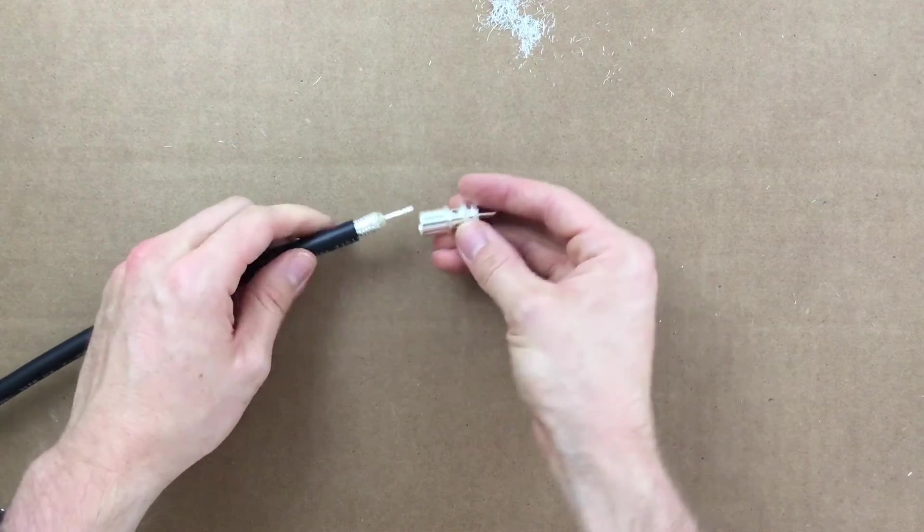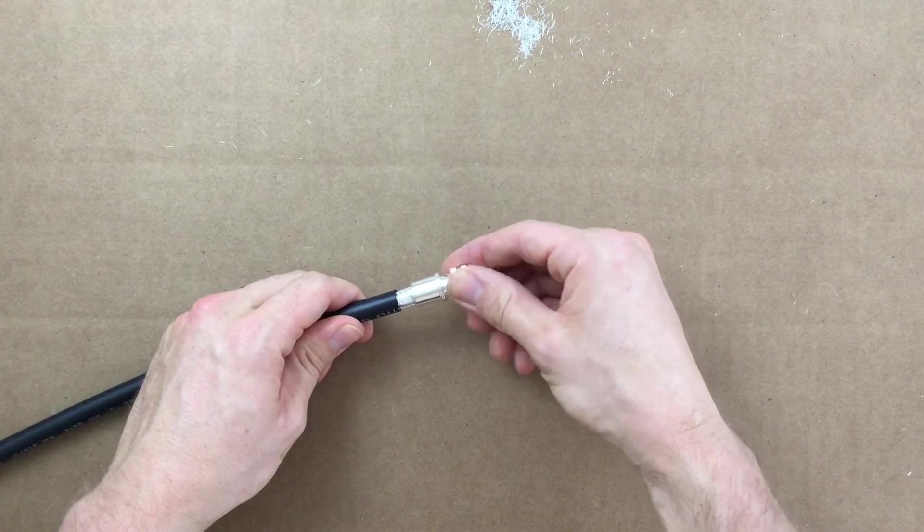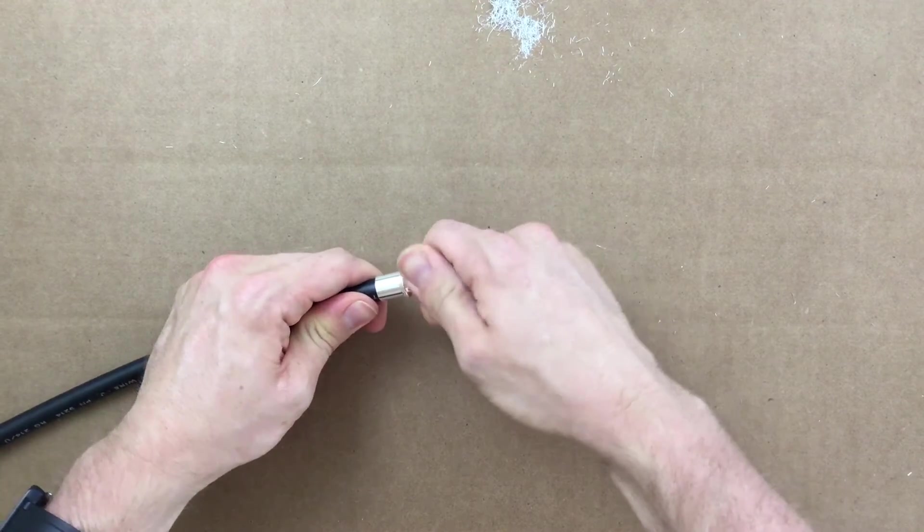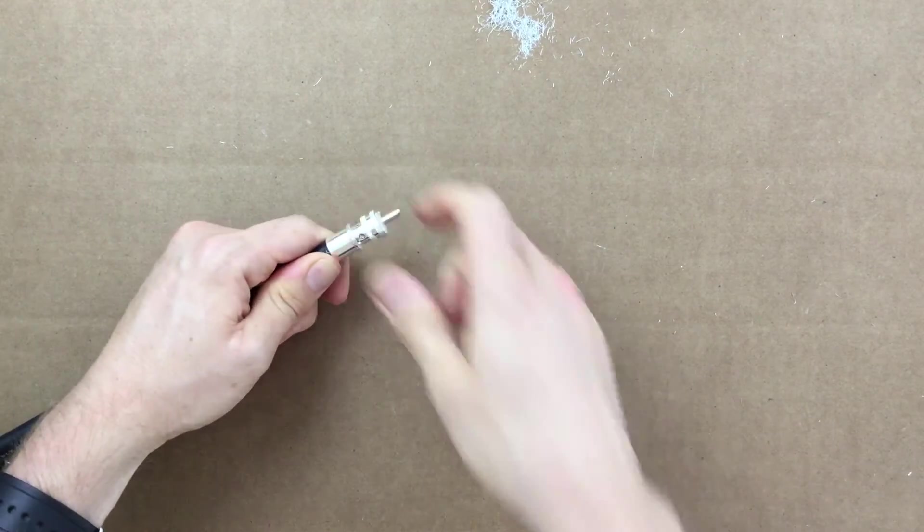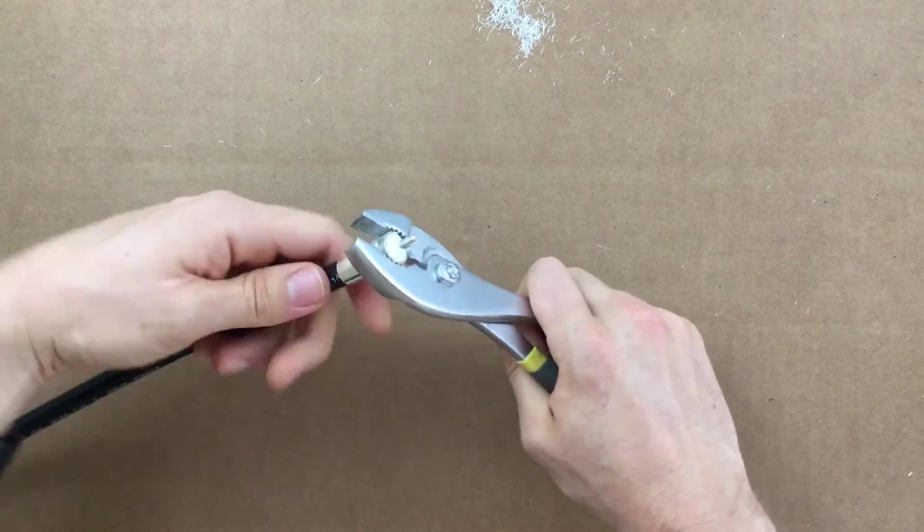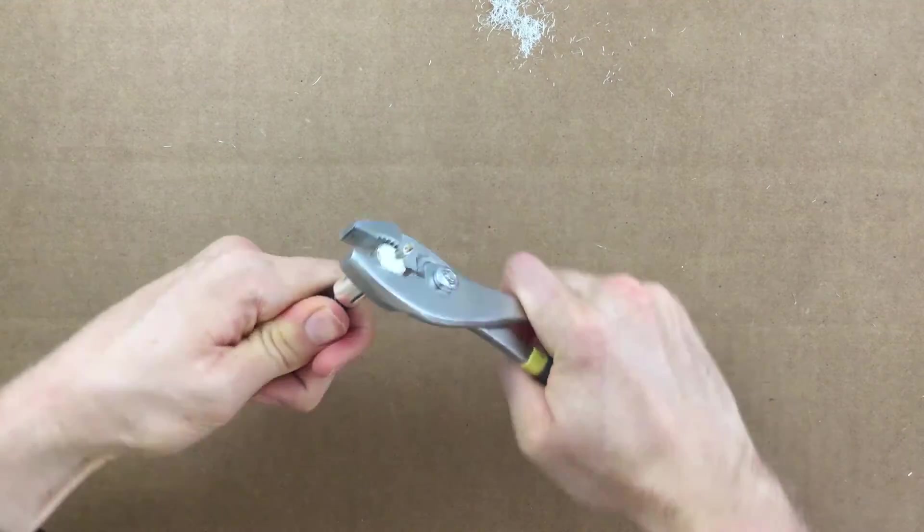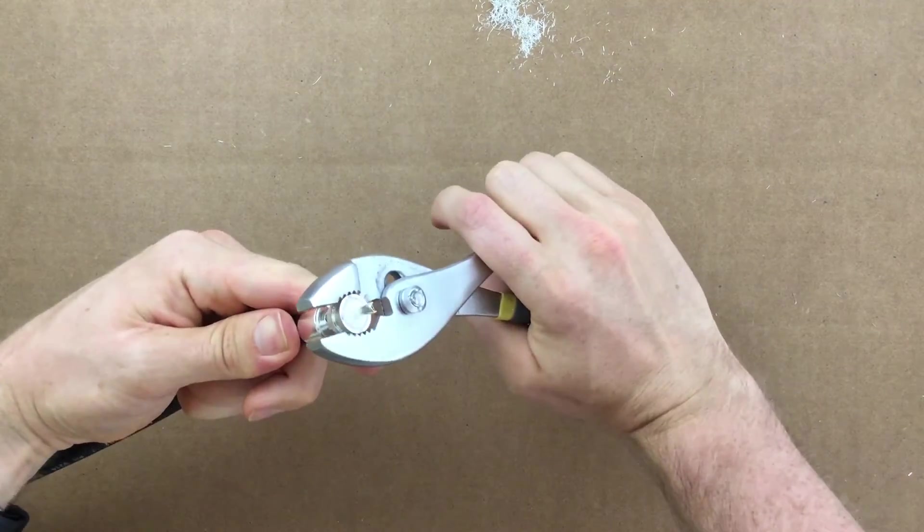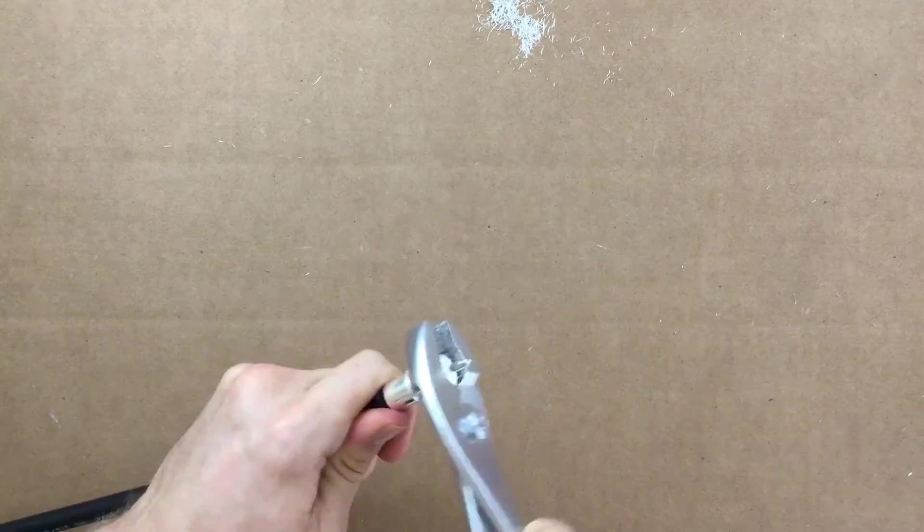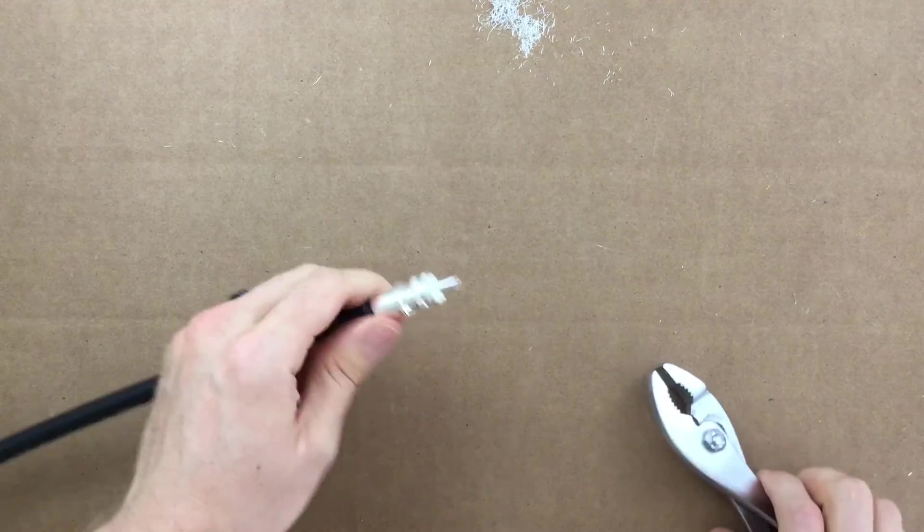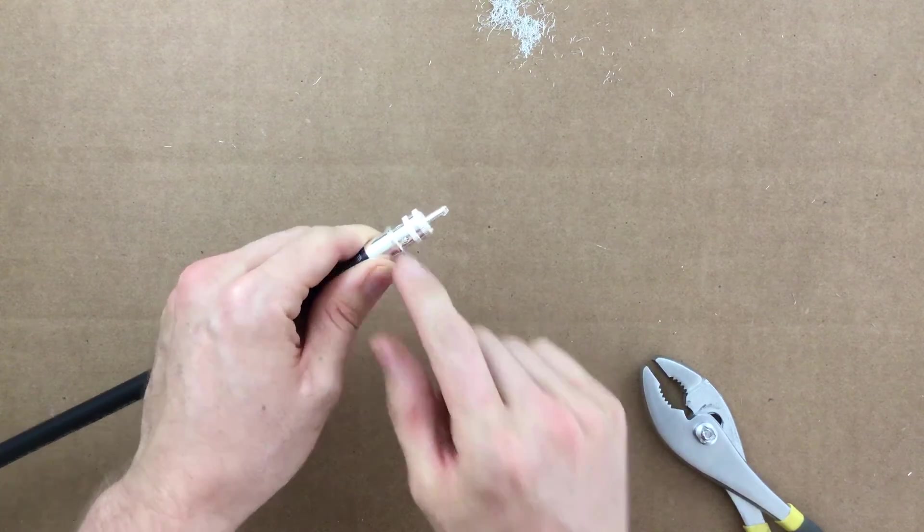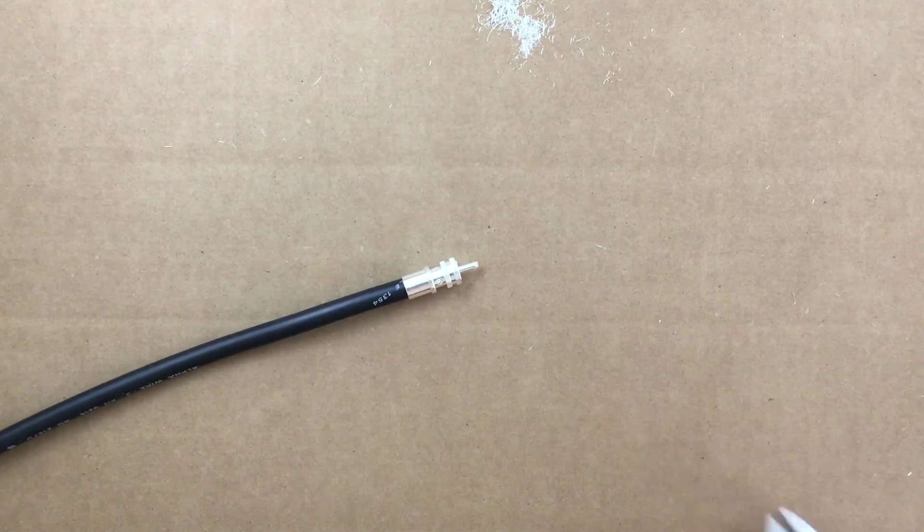Grab your PL259 inner body and with a twisting motion to the right or clockwise, begin to thread it onto the coax. You may need a pair of pliers as I did here to get the center conductor through the end of the center pin of the PL259. You should see the center conductor of the cable aligned with the end of the PL259 center pin. If there is any extra, just trim it off with your cutters.